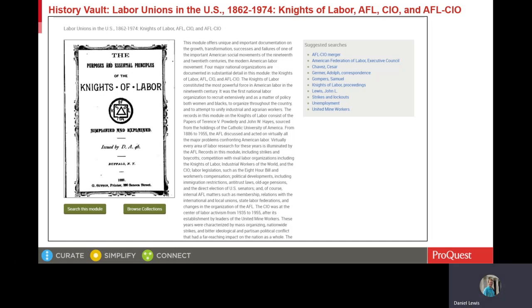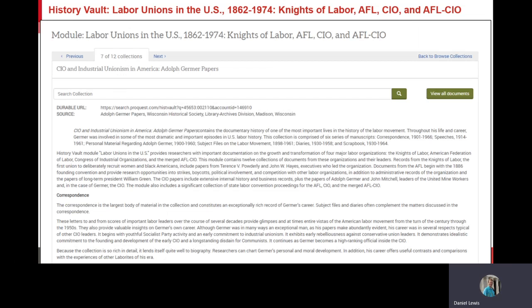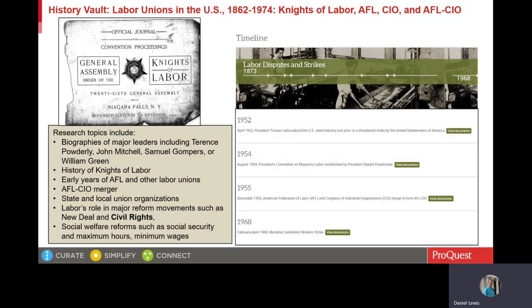This module includes records of the Congress of Industrial Organizations from 1935 to 1955, and records of the AFL from 1955 to 1974. These and other collections in this module include documentation on the Civil Rights Movement, on labor's role in the New Deal, the evolution of labor organizations over time, labor's connection to issues like social security, maximum hours, and minimum wages. This module also includes two collections on the Knights of Labor at the turn of the 20th century.